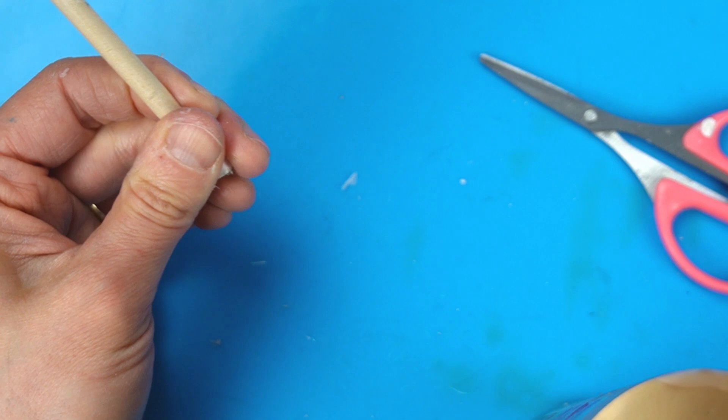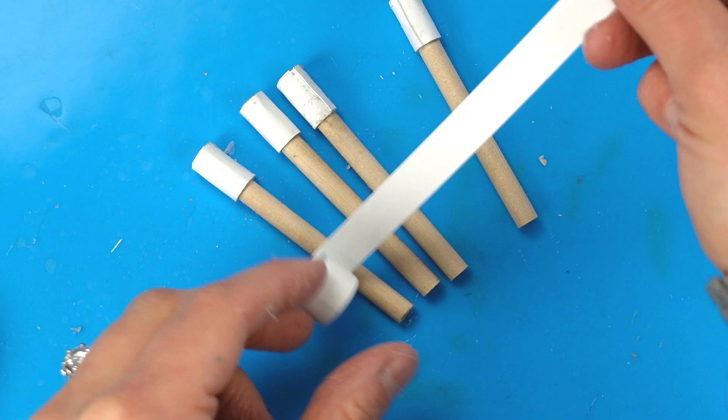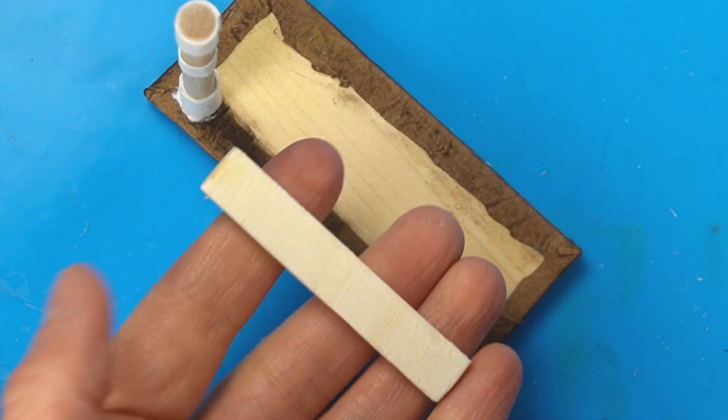Since I used such thick paper, I only needed to wrap it a couple times. I sealed it shut with some tacky glue and made four of these. Then I used the same technique to add some couplings to the bottom of the legs.